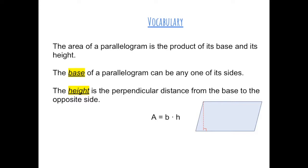The area of a parallelogram is the product of its base and its height. So product means to find the area of the parallelogram, we multiply the base times the height. The base of the parallelogram can be any one of its sides, and the height is the perpendicular distance from the base to the opposite side.